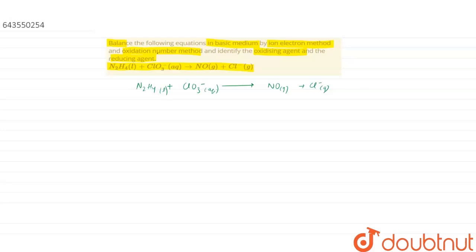First we have to find out the oxidation state of nitrogen and chlorine in each of these. The oxidation state of nitrogen in N2H4: 2x + 4(+1) = 0, which gives x = -2. In NO, the oxidation state of nitrogen is +2. Since the oxidation state is increasing, N2H4 is a reducing agent.